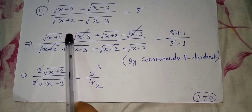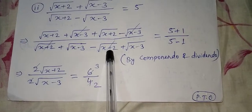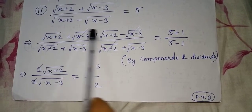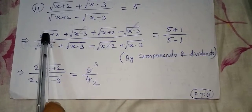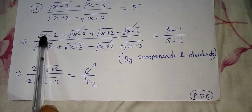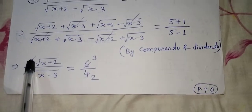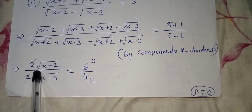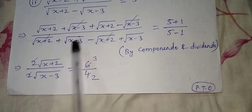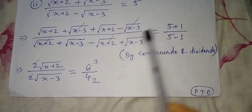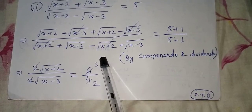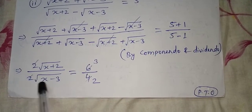After simplification, √(x-3) terms cancel (plus and minus cancel), and √(x+2) terms also cancel similarly. What remains: √(x+2) + √(x+2) = 2√(x+2) on the numerator, and √(x-3) + √(x-3) = 2√(x-3) on the denominator — just like mango plus mango is 2 mangoes. On the right side, 5+1 = 6 and 5-1 = 4. The 2s cancel, giving us √(x+2)/√(x-3) = 6/4 = 3/2.